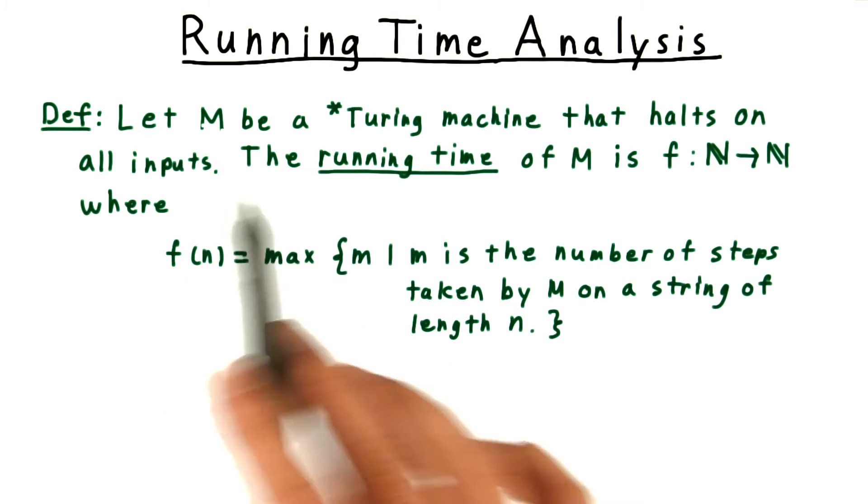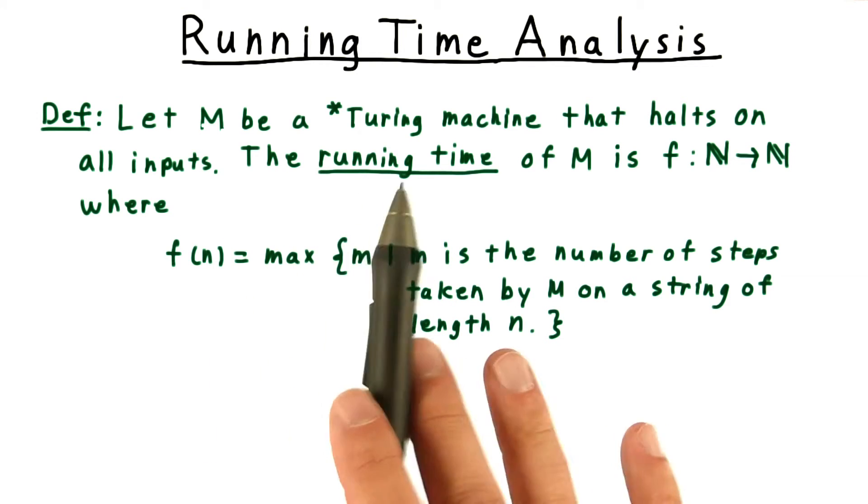We'll let M be a Turing machine, single tape, multi tape, random access. The definition works for all of them.